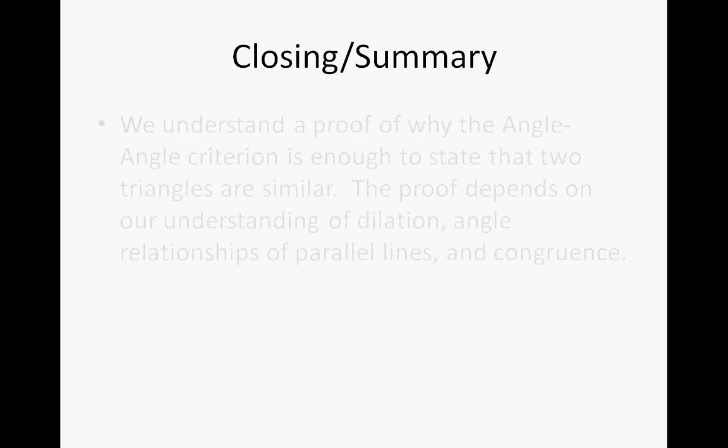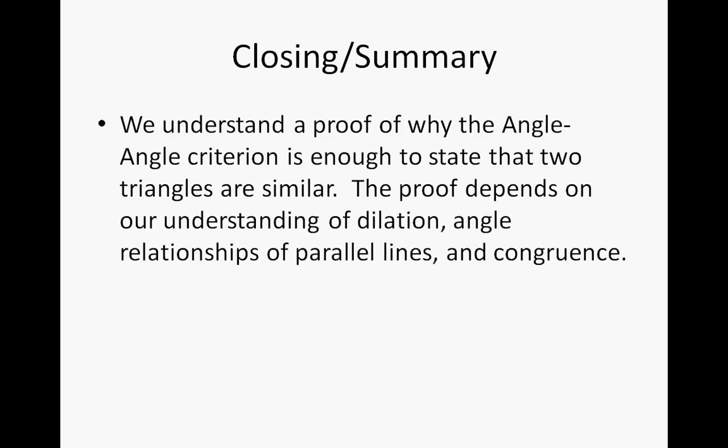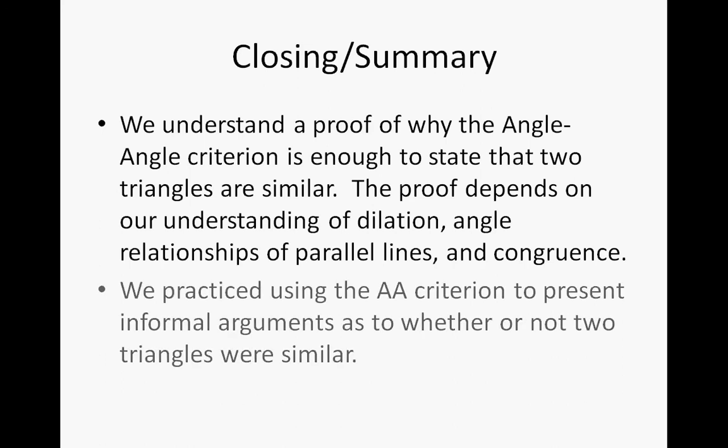In summary, we understand a proof of why the angle-angle criterion is enough to state that two triangles are similar. The proof depends on our understanding of dilation, angle relationships of parallel lines, and congruence. We need to talk about all three of those things to come up with the angle-angle criterion. We practice using the angle-angle criterion to present informal arguments as to whether or not two triangles are similar. We'll see you in class.